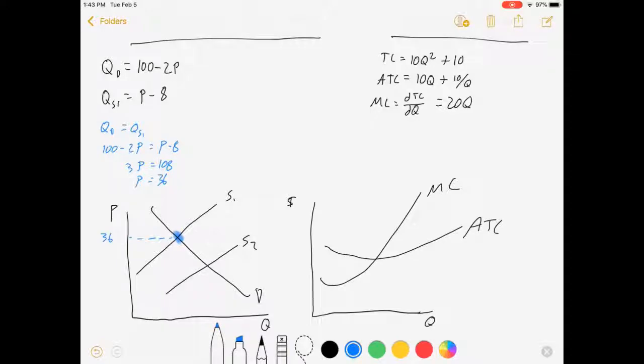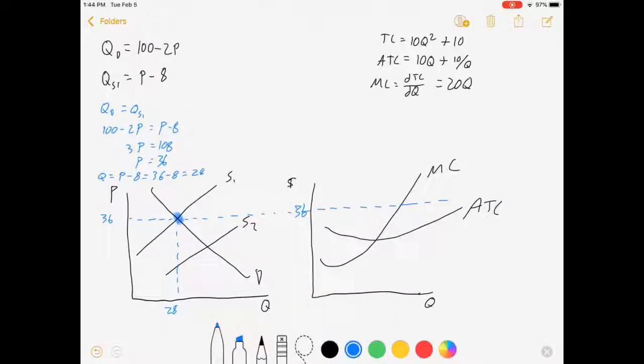Now this price is the same price for every single firm in the market. And so when we look at our individual firm later, they'll be taking the price of 36 as given. It'll be chosen without their ability to change it. If we wanted to keep going on this market stuff, we could say that the Q is equal to P minus 8, 36 minus 8 is 28.